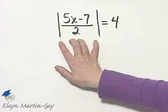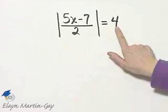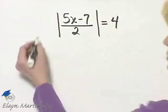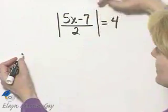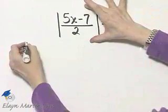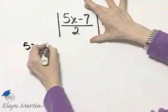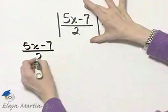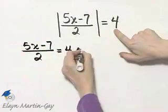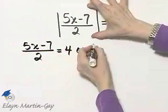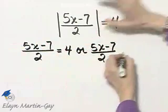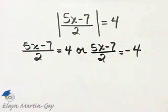Let's solve this absolute value equation and notice this is a positive number. So for this to be true, what is within these absolute value bars, in this case 5x minus 7 all over 2, must equal 4 or what is within these absolute value bars, 5x minus 7 over 2, that must equal negative 4.